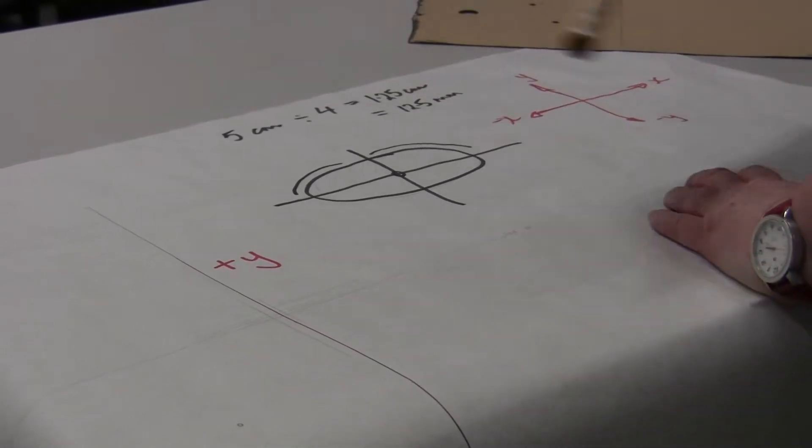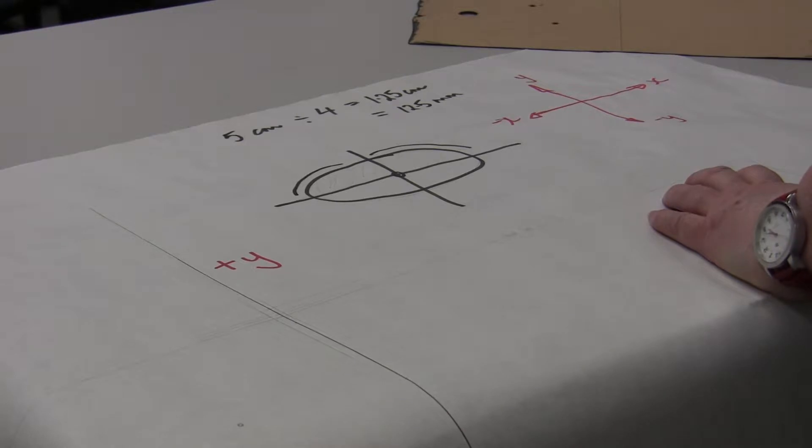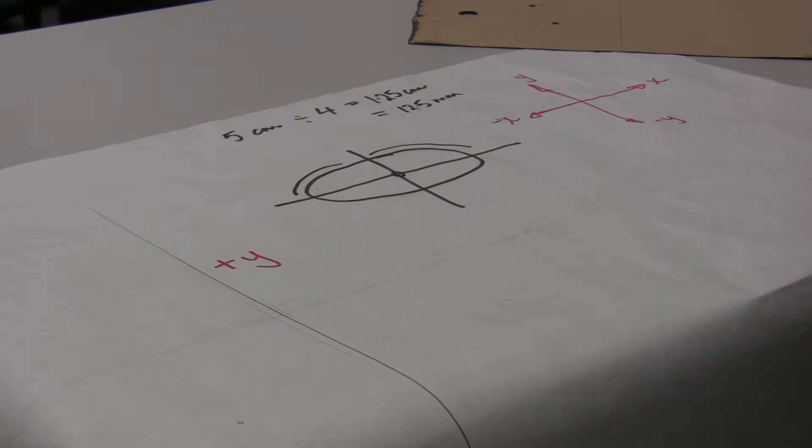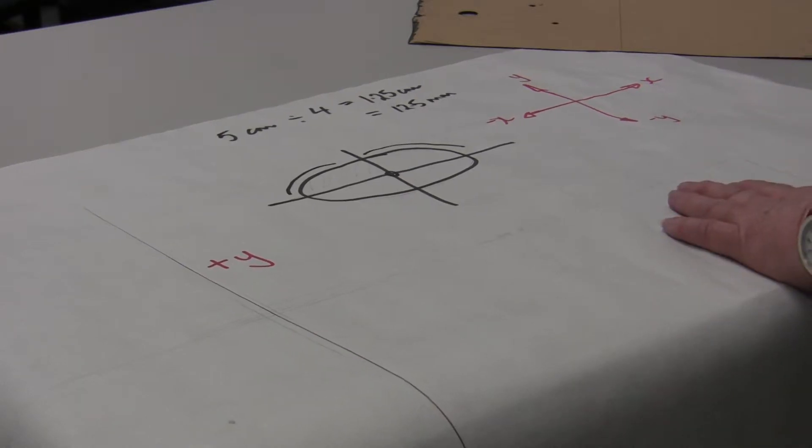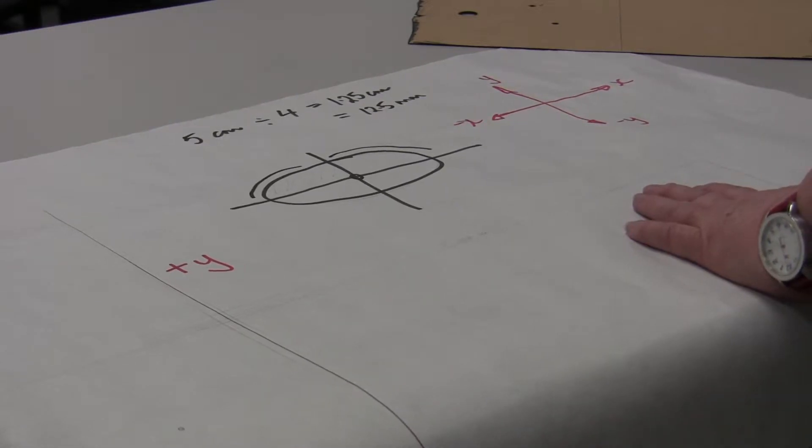That's the amount around the body that we have to grow, and we don't just add it all onto the side seam or the center front. We have to distribute that growth the way the body is actually increasing or decreasing in size.